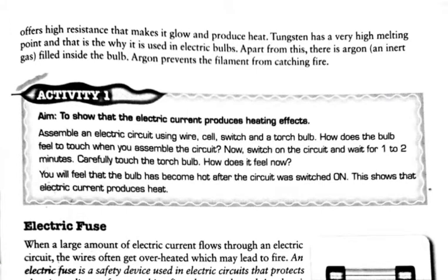Also, tungsten has a very high melting point. This high melting point causes tungsten to withstand high temperatures — it doesn't melt even when the filament becomes very hot. Because it is made of tungsten, the filament does not melt even when extremely heated.